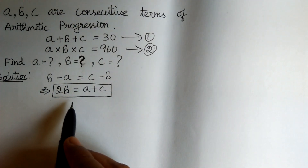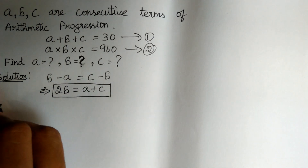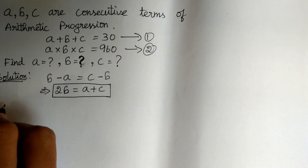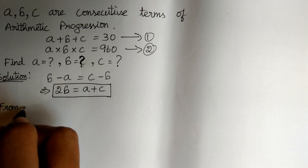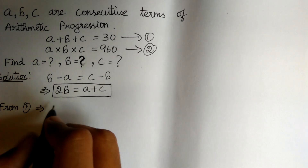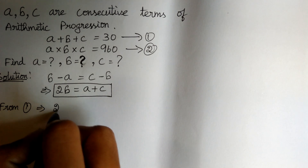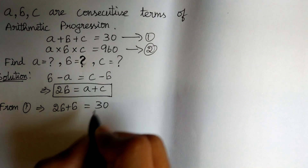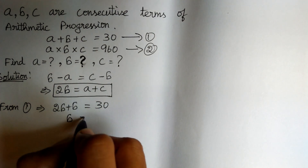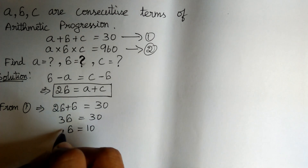I have already told the formula to derive this in the last video. Now, substituting this in equation 1, we get A plus C equals 2B, so 2B plus B equals 30. That is, 3B is equal to 30, therefore B is equal to 10.